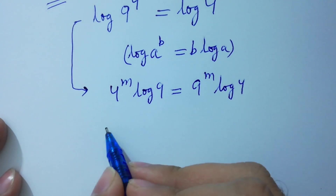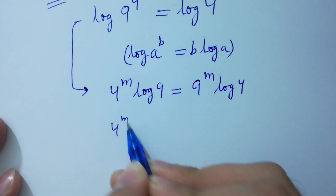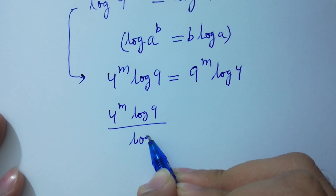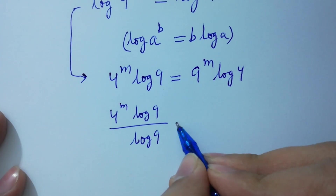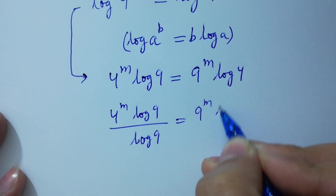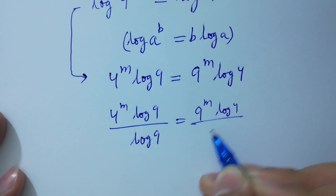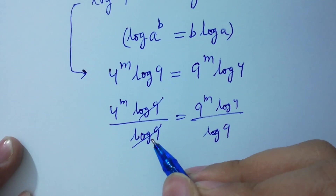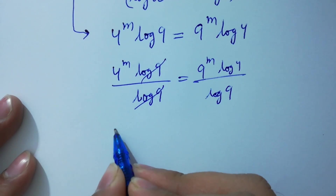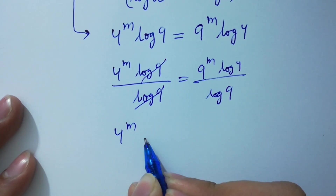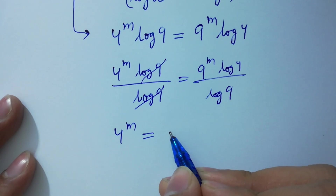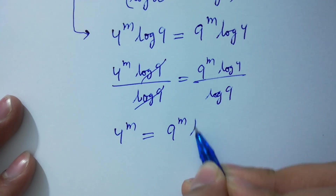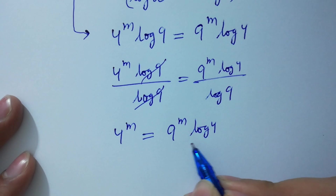In the next step, divide on both sides by log 9. Log 9 and log 9 will be cancelled. We get 4 to the power m equal to 9 to the power m times log 4 over log 9.